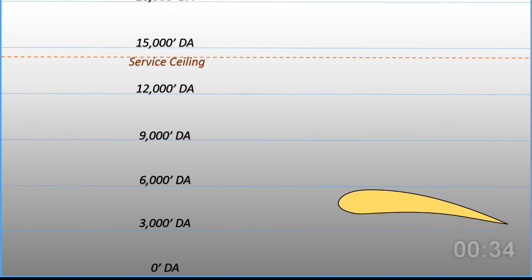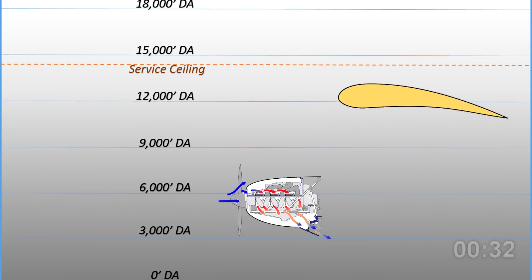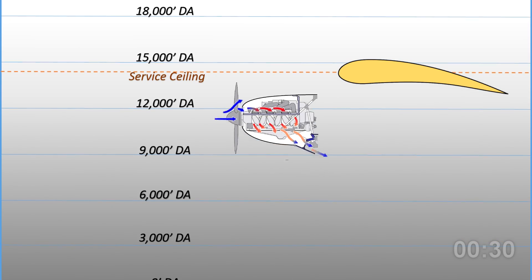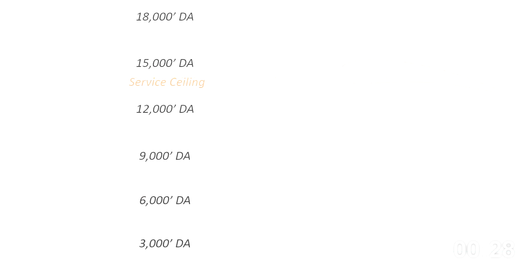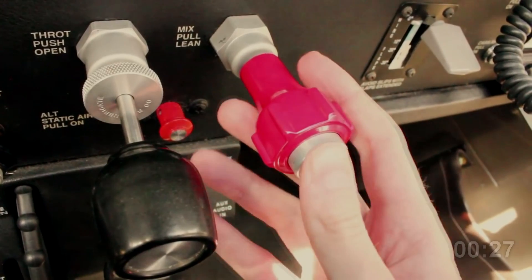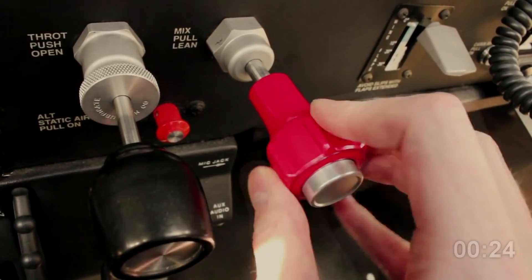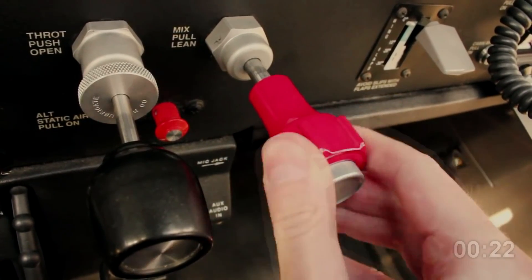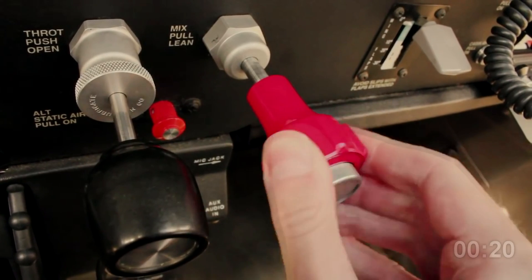The airplane wing is getting less air to react to, as the normally aspirated engine has less air to mix with the fuel, throwing the air-fuel ratio off. That's why leaning the engine with the mixture control is critical above altitudes greater than 3,000 feet.